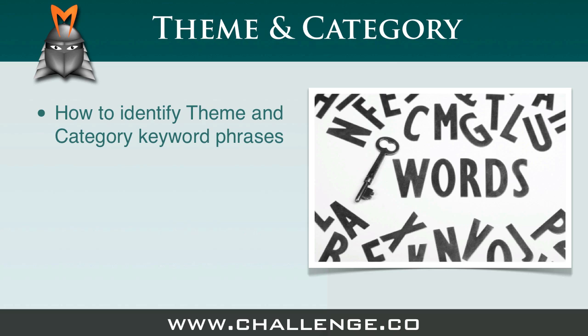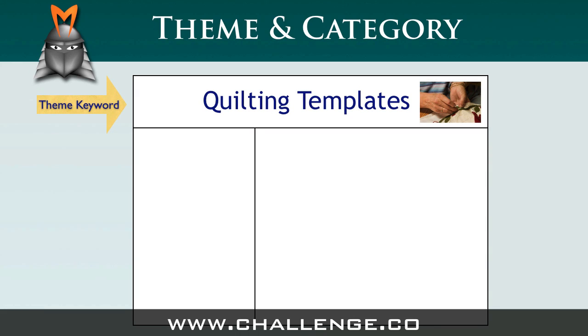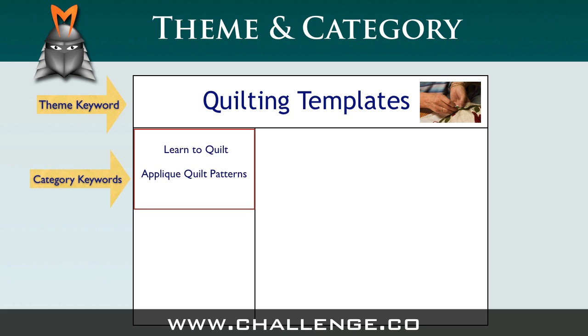Let's begin by defining what theme and category keywords actually are. The easiest way to understand this is to imagine that your theme keyword describes the overall theme of your website, while the category keywords describe the different categories of information contained within your website.